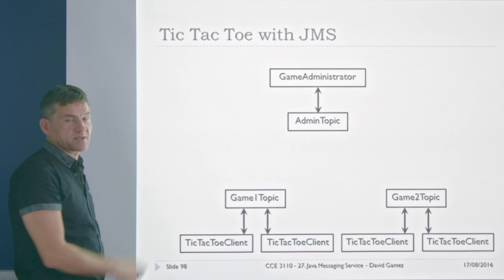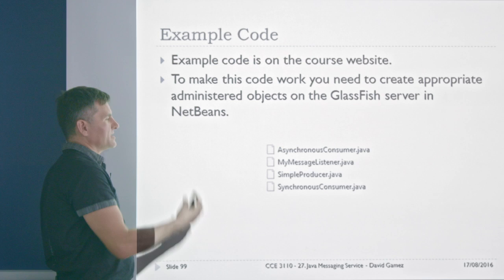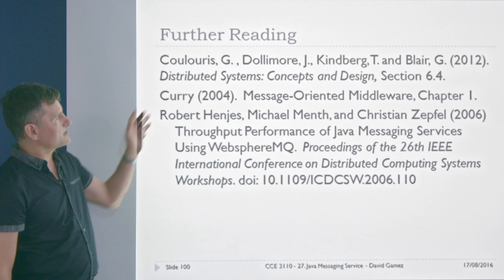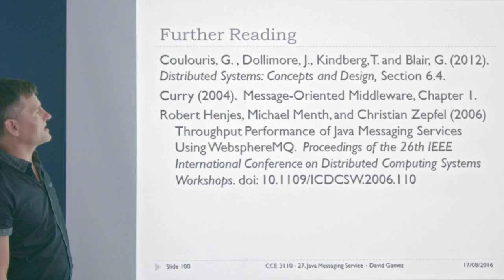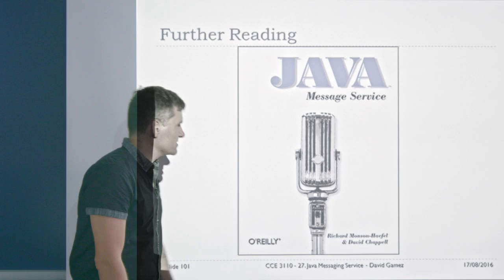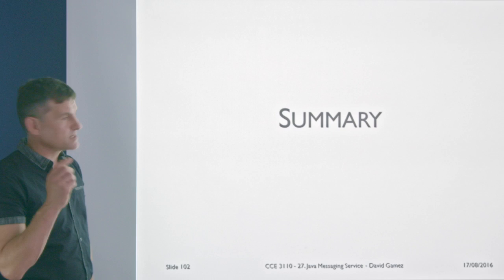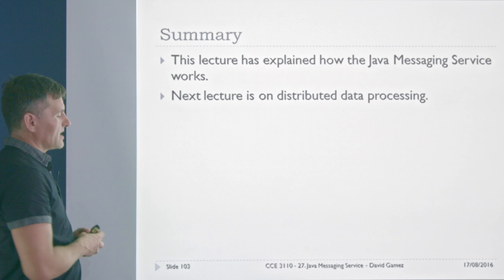The example code is on the course website. You need to follow the instructions in these slides to make it actually work, because you have to deploy all the administered objects, but the basic code is all there to have a look at. There are a few chapters on distributed systems that might be useful, as well as the performance paper, and there's a book on it — unfortunately without an animal picture on the cover. In this lecture I've explained how the Java Messaging Service works; next we'll move on to distributed data processing.